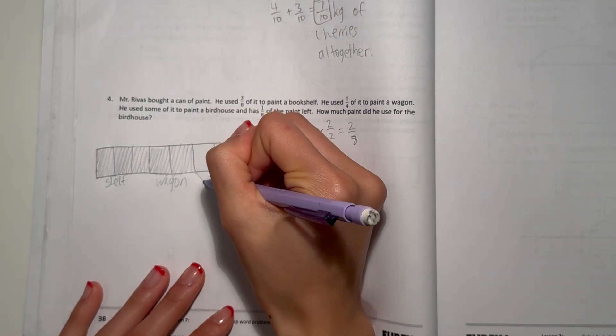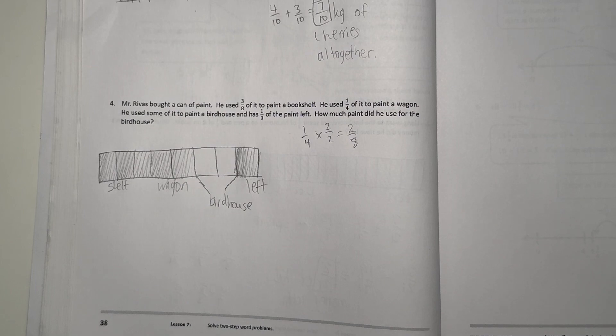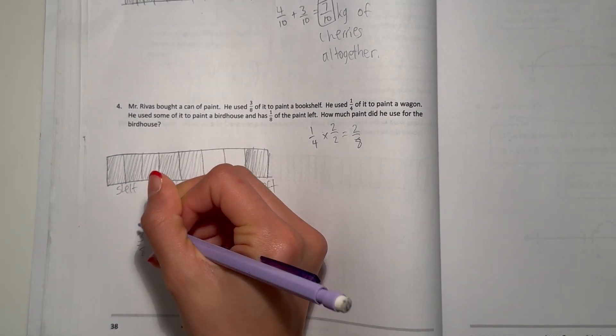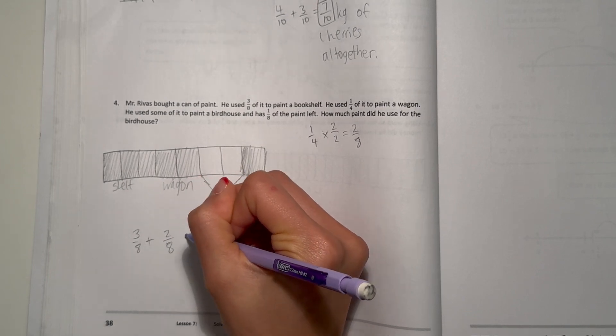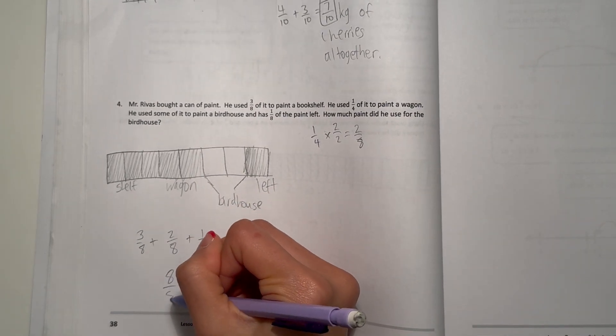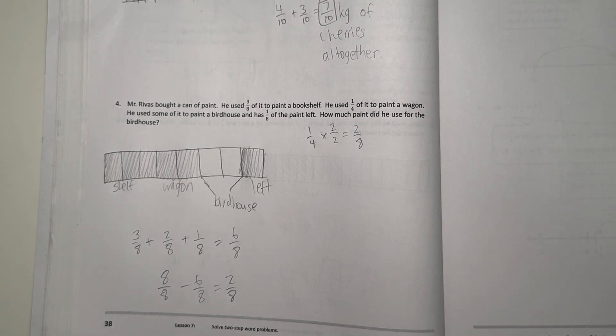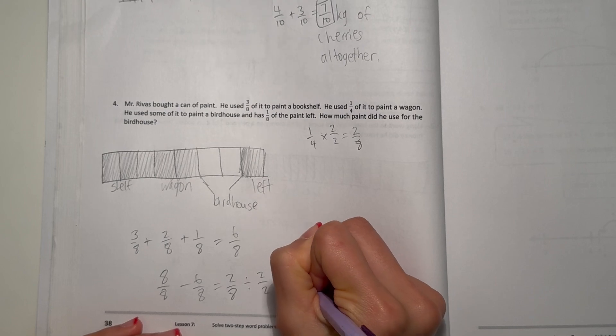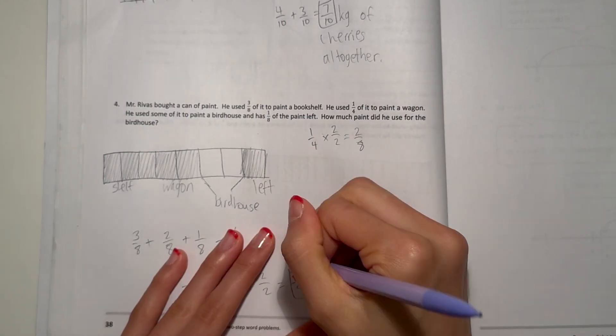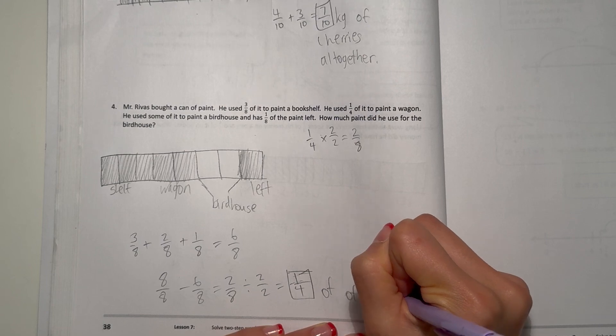So that means this much is how much he used to paint the birdhouse. So how much paint did he use for that? Well, he used three-eighths for bookshelf, plus two-eighths for the wagon, and now he has one-eighth left over. So that's six-eighths. So if we take our total, eight-eighths minus six-eighths equals two-eighths. And two-eighths, if you divide that by two to simplify, that's one-fourth. That means he used one-fourth of the paint.